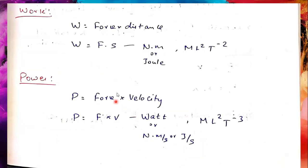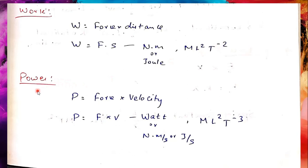Next one is work. Work is important — that is energy. Energy converts from one form to another. The formula for work is force into distance, that is F × s. The unit is newton⋅meter or joule. The dimensional formula is ML²T⁻².